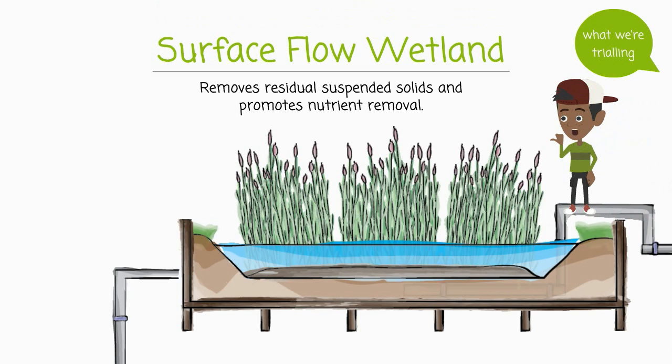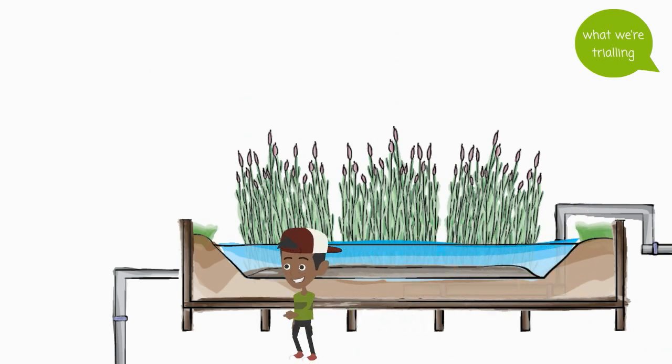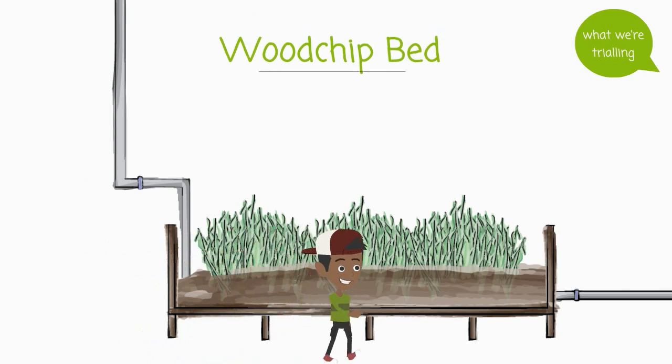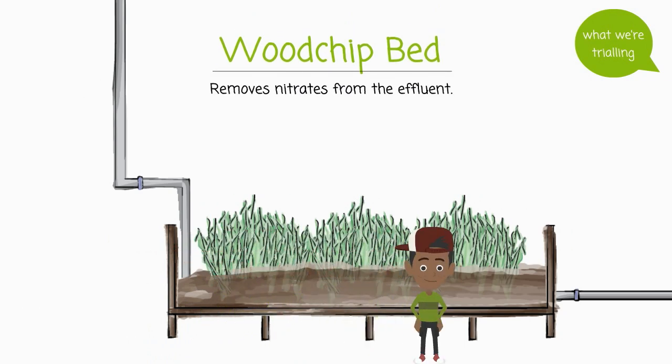Then it will head through a surface flow wetland. Plants in the wetland would absorb and filter nutrients and more solids out of the water. From there, the water carries on through a bed of wood chips that removes the nitrates.